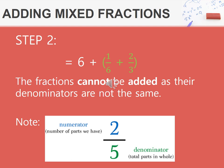2 plus 4 from the previous slide gives us 6 as the whole number. The fractions cannot be added as their denominators are not the same. You must also note that the top number is a numerator, the number of parts which we have. The denominator is the bottom part, which is total parts in the whole.